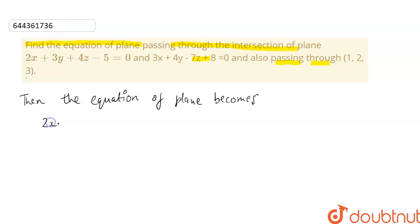See, this becomes 2x plus 3y plus 4z minus 5 and plus here we use lambda because it is intersection of two planes. 3x plus 4y minus 7z plus 8 is equals to 0.